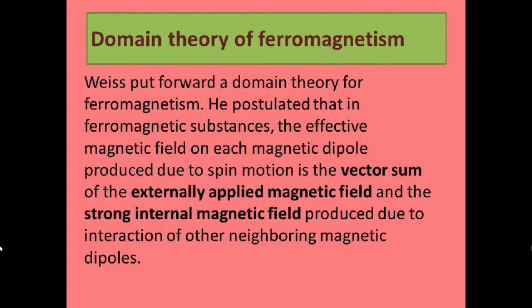Weiss postulated that in a ferromagnetic substance, the effective magnetic field on each magnetic dipole produced due to spin motion is the vector sum of the externally applied magnetic field and the strong internal magnetic field produced due to interaction of other neighboring magnetic dipoles.